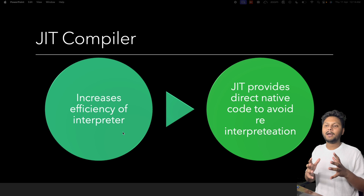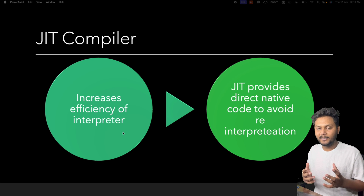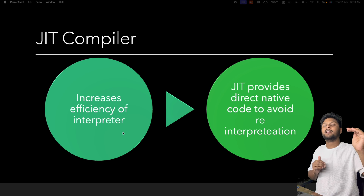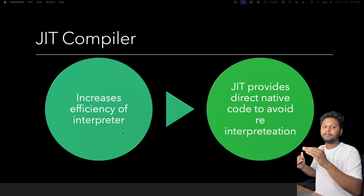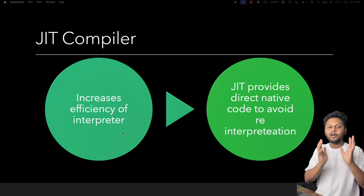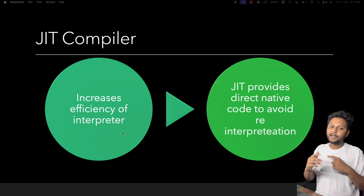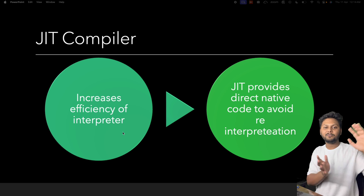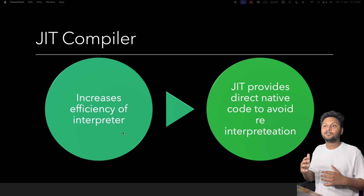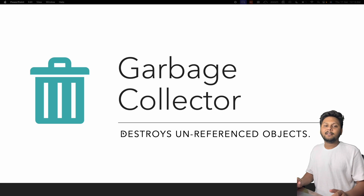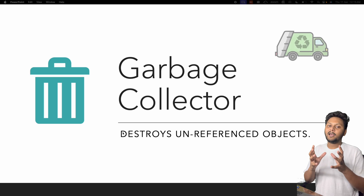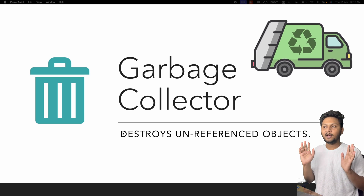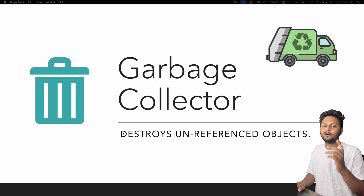To overcome the interpreter's disadvantage, the JIT compiler comes into picture. The JIT (just-in-time) compiler increases the efficiency of the interpreter by converting byte code into native code. Whenever the interpreter encounters a repeated method, the JIT compiler provides the native code directly so it doesn't have to reinterpret it — if called a thousand times, JIT returns the same chunk of native code. The garbage collector's task is to remove objects from memory that are no longer being used.